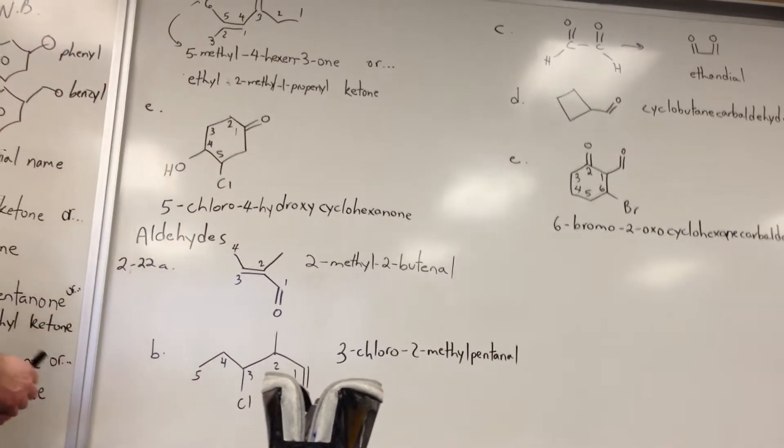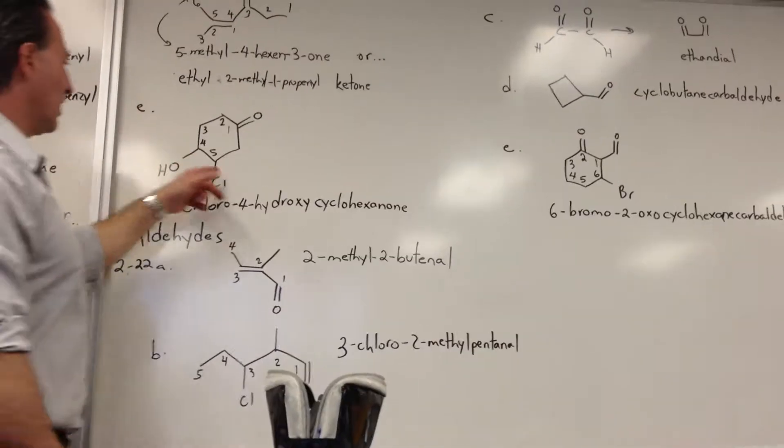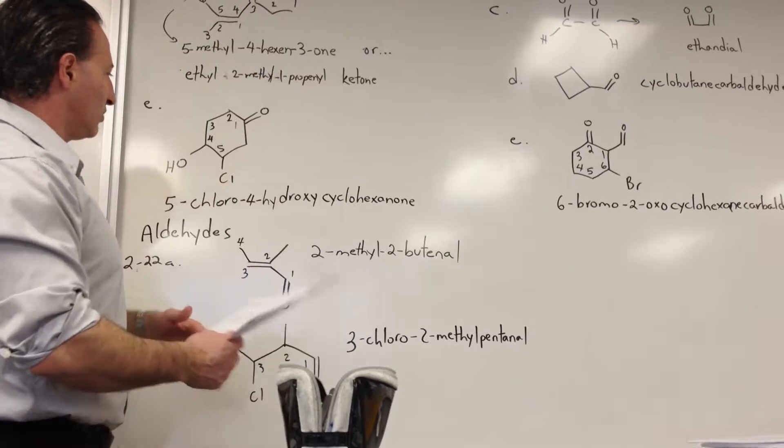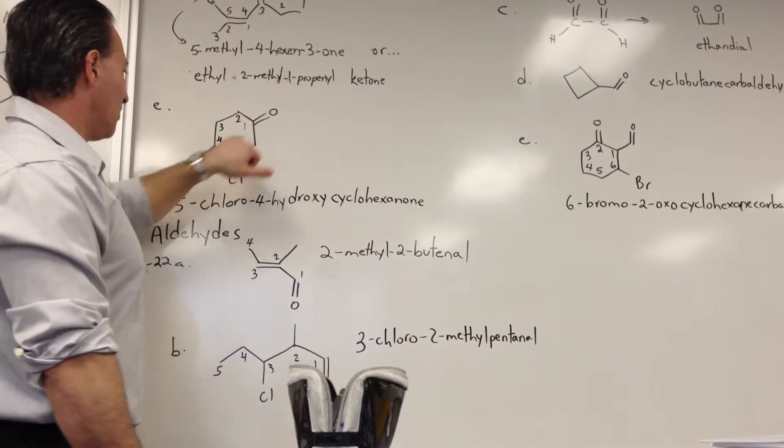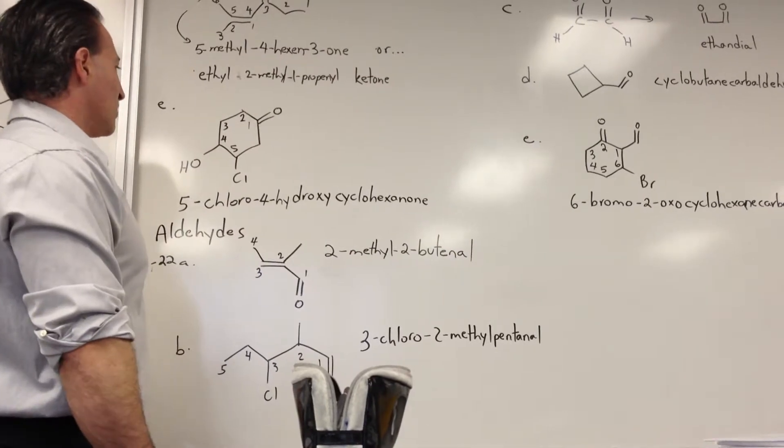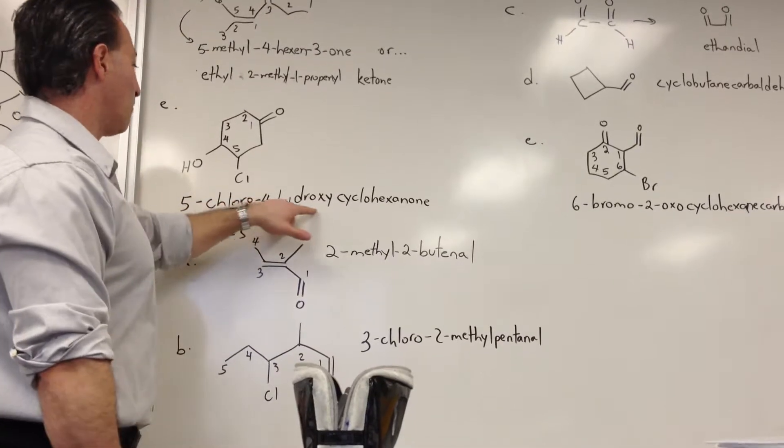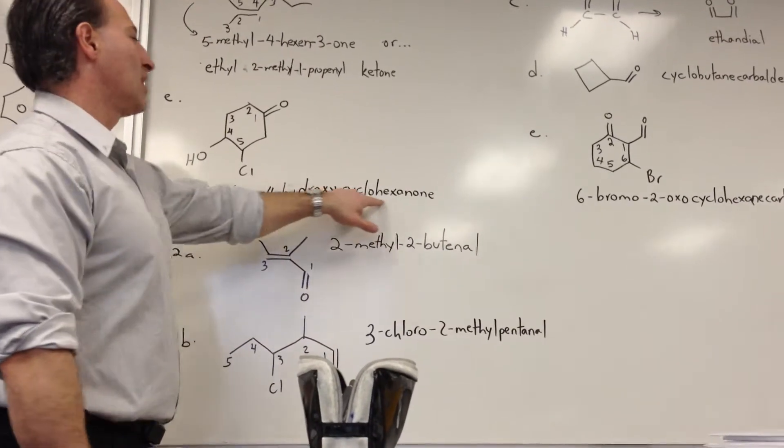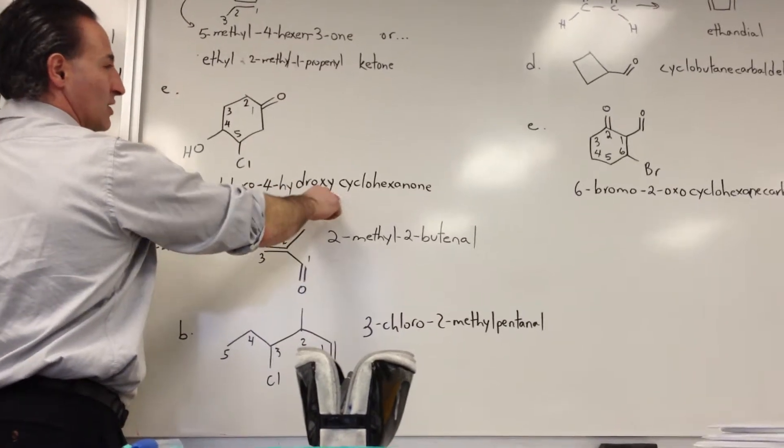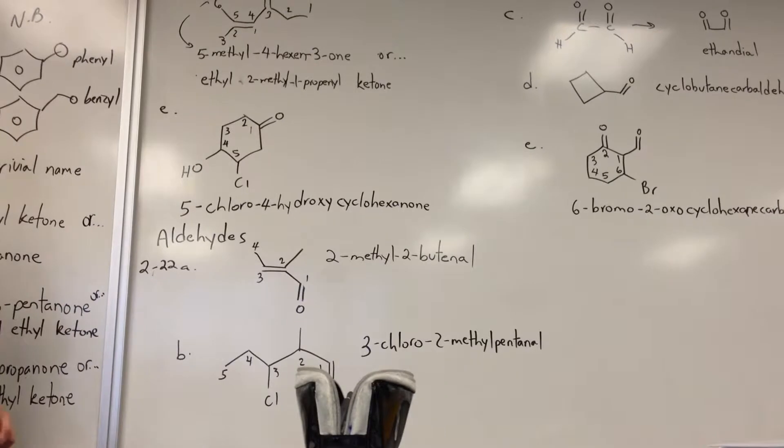In the next example, we have a cyclic ketone with a hydroxyl and a chlorine. The highest priority group on this cyclohexane would be the ketone group, followed by the alcohol, followed by the halide. So we would call it 5-chloro, again we try to alphabetize these substituents, 5-chloro-4-hydroxycyclohexanone. Remember when alcohol is a substituent, you call it hydroxy. When it's the main group, you put ol as the suffix.